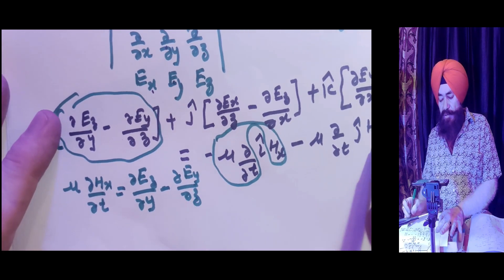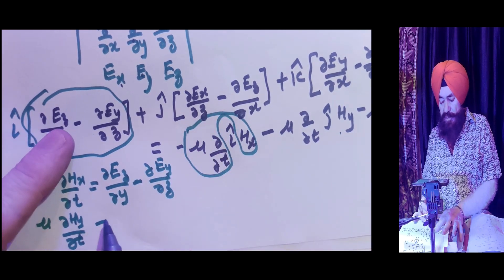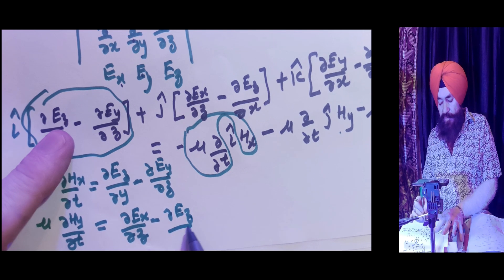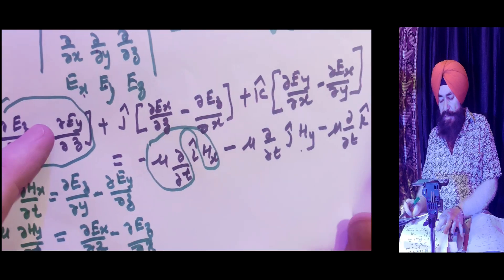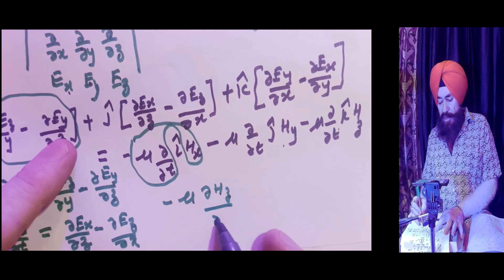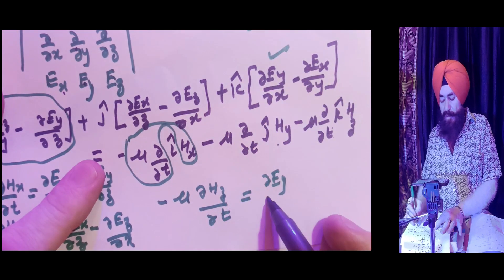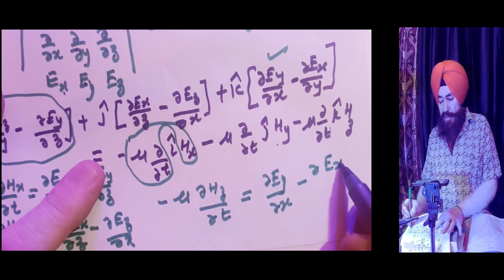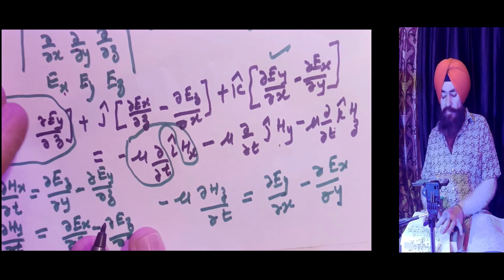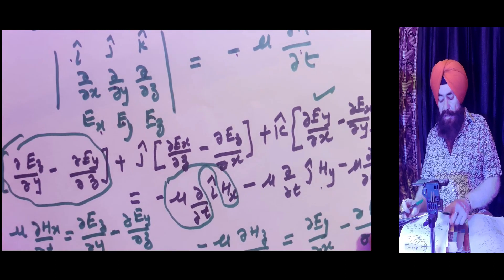Comparing J-cap components gives: μ ∂HY/∂T equals ∂EX/∂Z minus ∂EZ/∂X. And comparing K-cap components gives: minus μ ∂HZ/∂T equals ∂EY/∂X minus ∂EX/∂Y. These are the component equations written from the curl E relation.